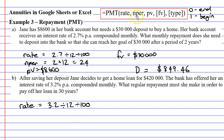Next, we want to know the number of time periods, or NPER. This is over a period of 30 years, and because we're doing it monthly, we need to multiply this by 12, which will give us 360 time periods, or 360 months.